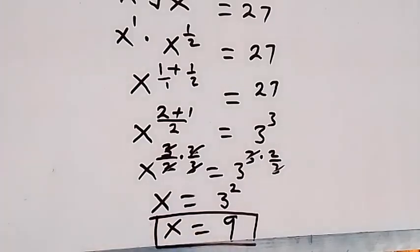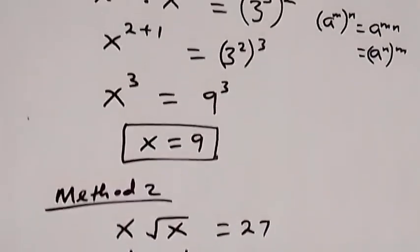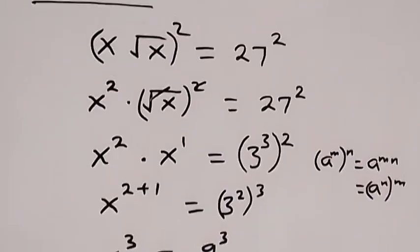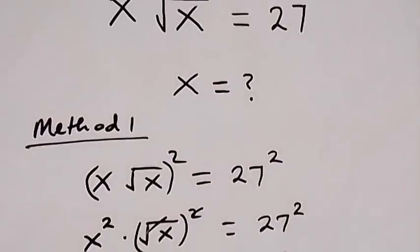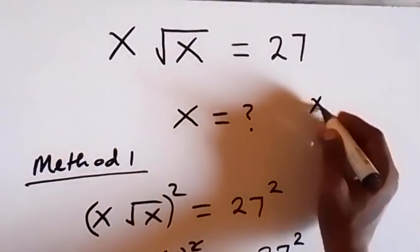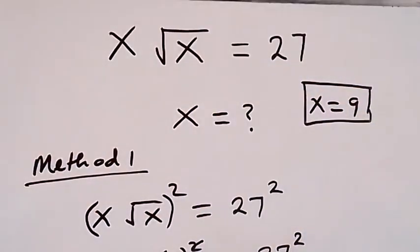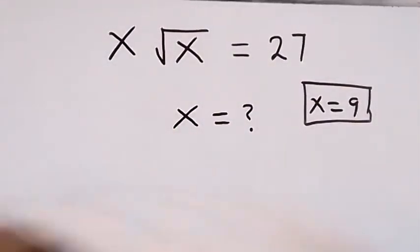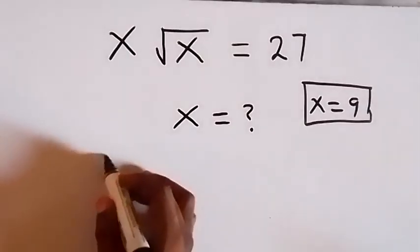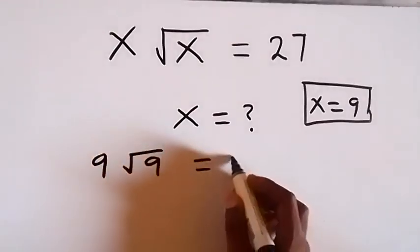To check if this satisfies what is given, we have x root x equals to 27, and we have x to be equal to 9. Let's substitute x equals to 9. We have 9 times root 9. Is this equal to 27?